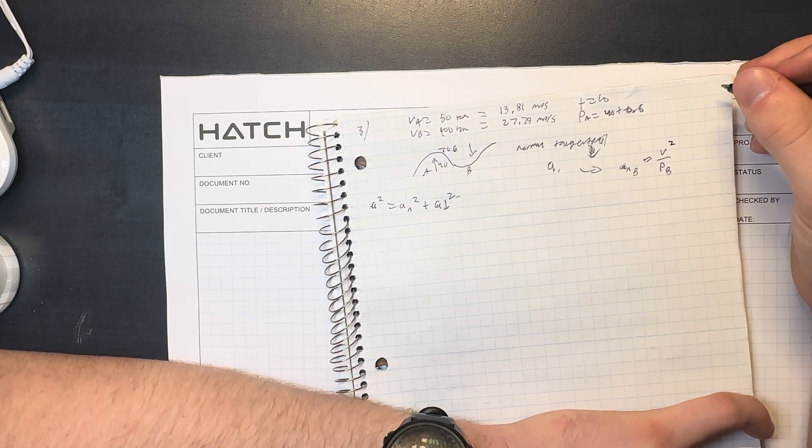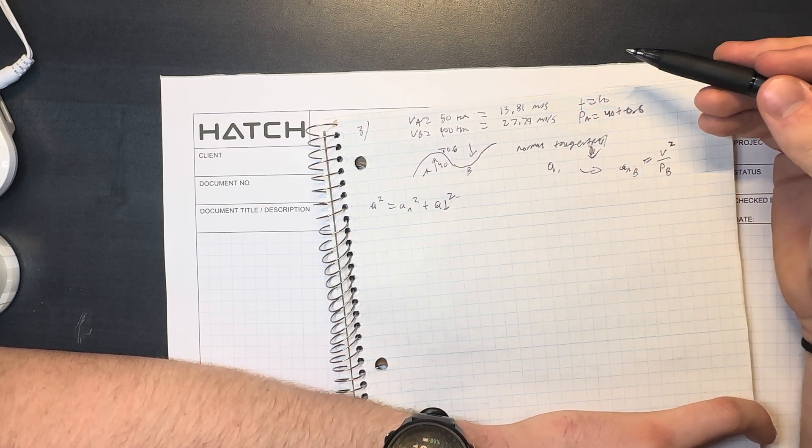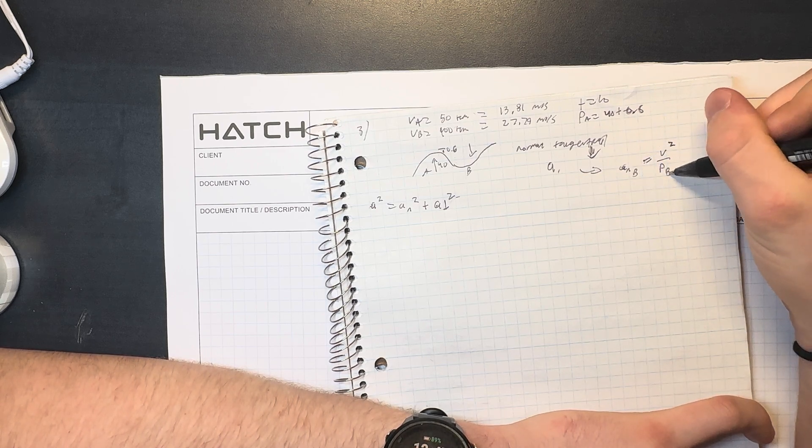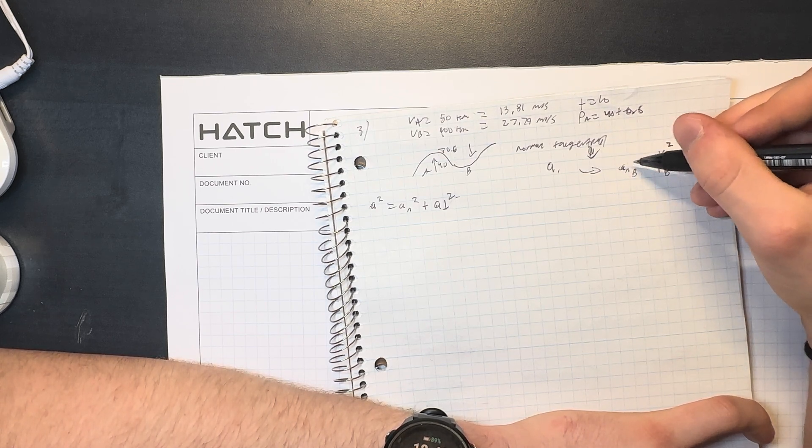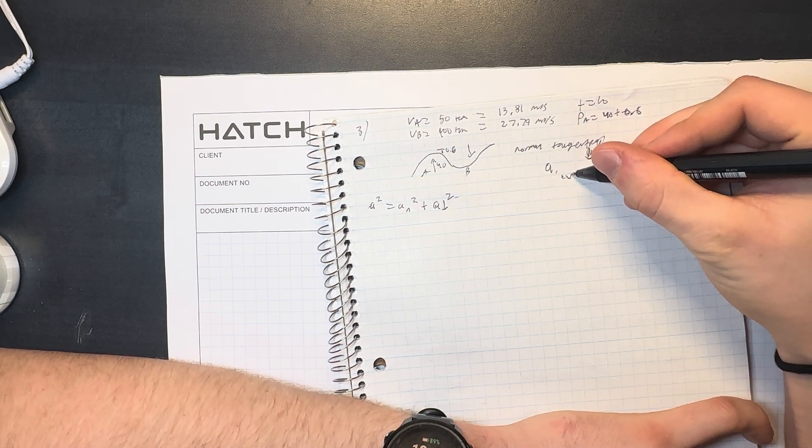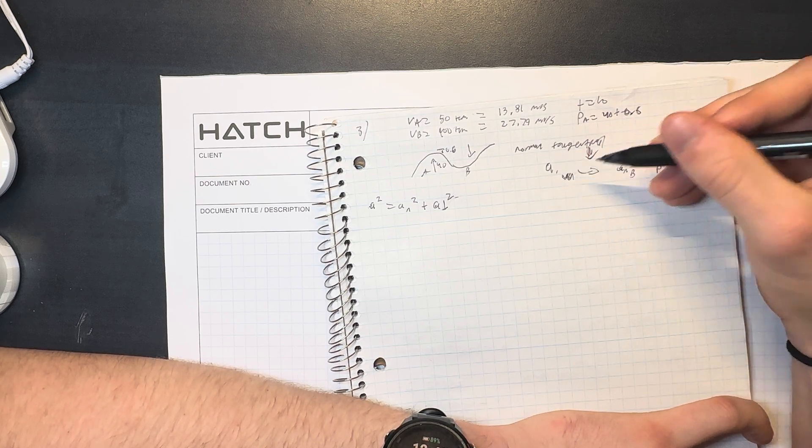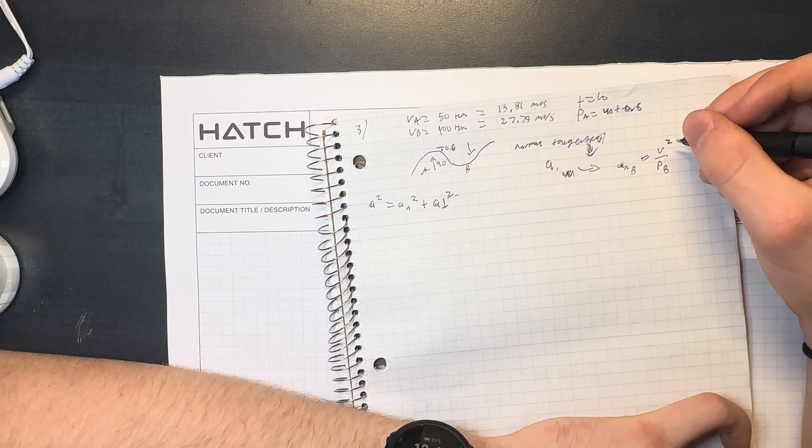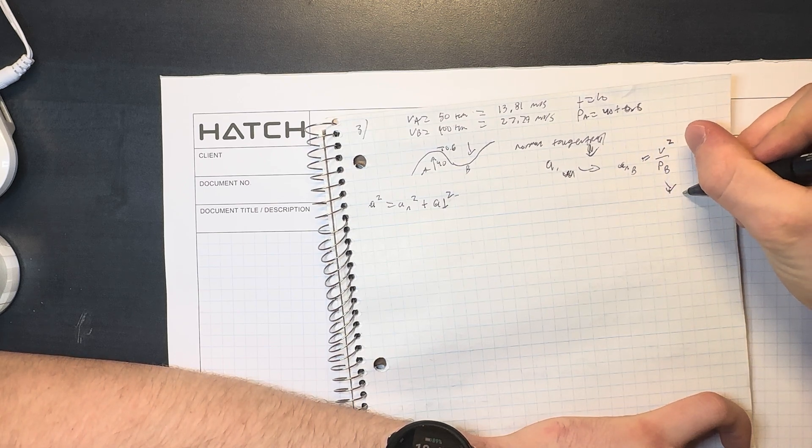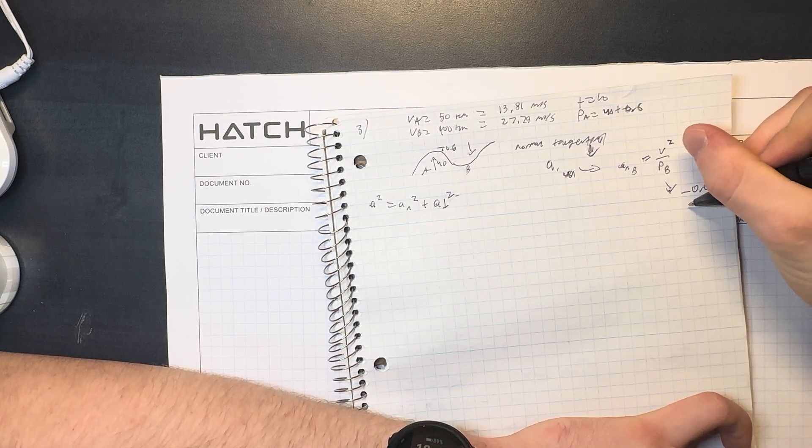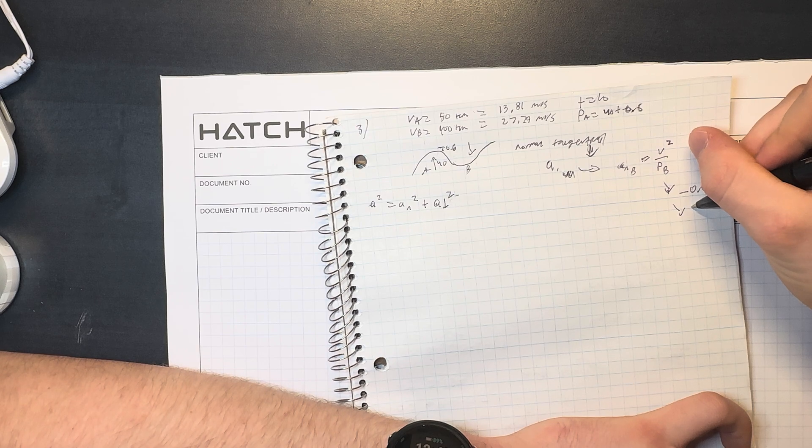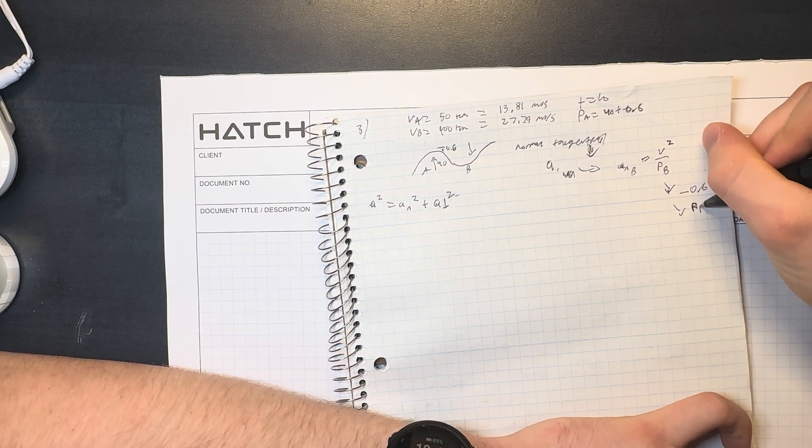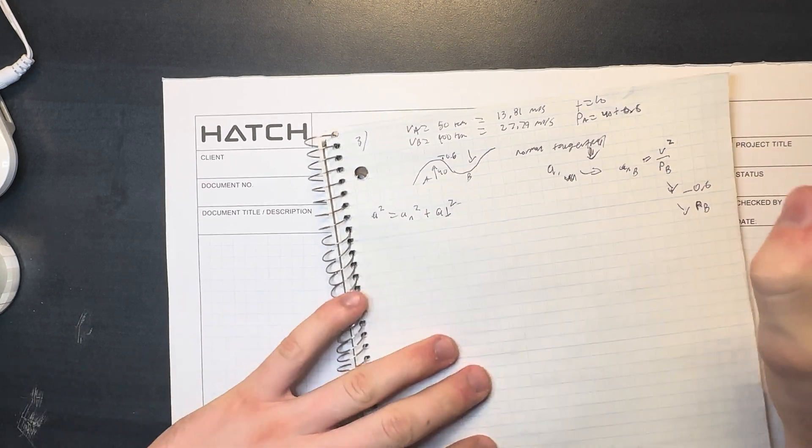But we know v, so we need to solve for it. We will know this from this equation. So we're going to solve for this, and from there we're going to subtract minus 0.6 to get back to just ρ_B.